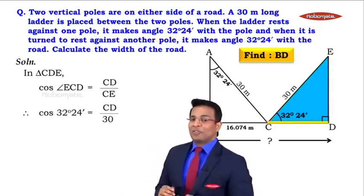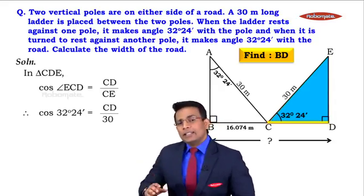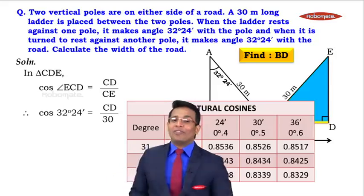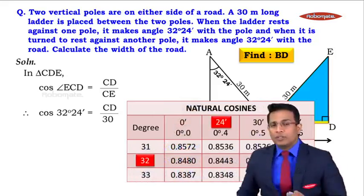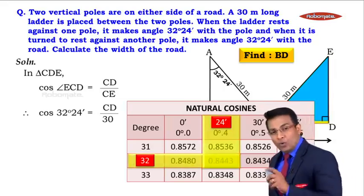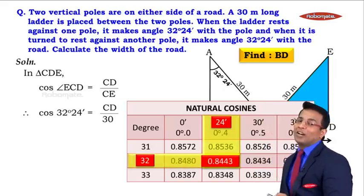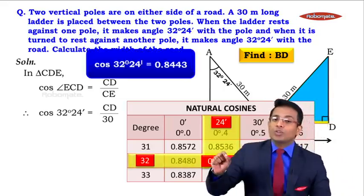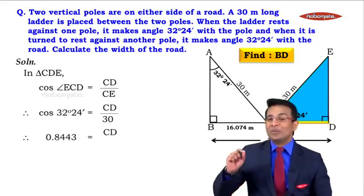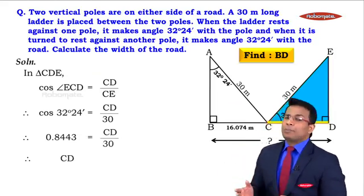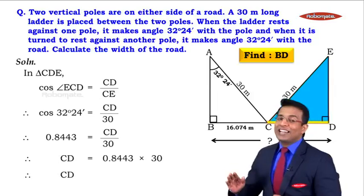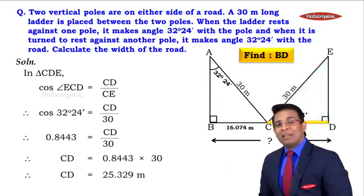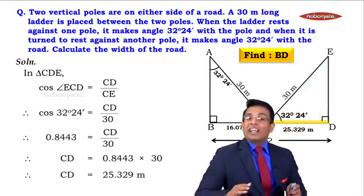We get the value of cos(32° 24') from the table of natural cosines. Looking at the row for 32 and the column for 24 minutes, the intersection gives cos(32° 24') = 0.8443. Substituting: 0.8443 = CD / 30, so CD = 0.8443 × 30 = 25.329 meters.